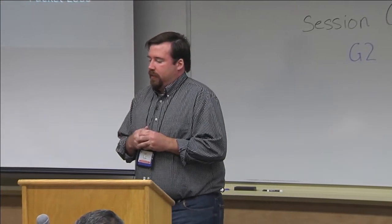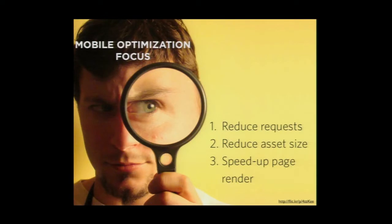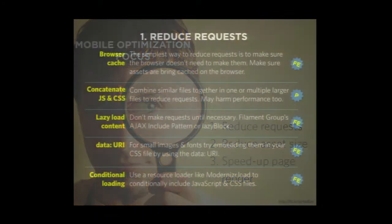Variable bandwidth and packet loss are also issues because not everybody is on 4G — as somebody from rural West Virginia knows. So what things should we focus on? What steps can we take? The big things are to reduce requests, reduce asset size, and speed up page render to optimize performance.